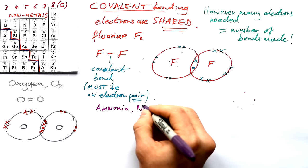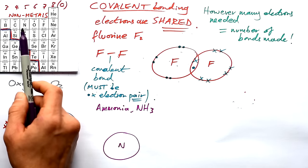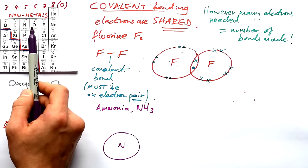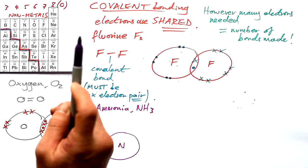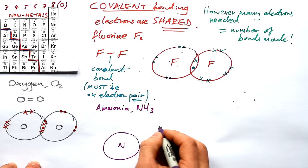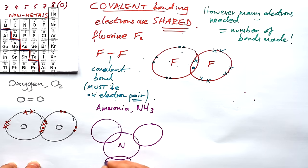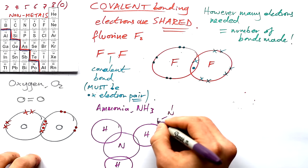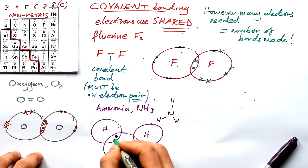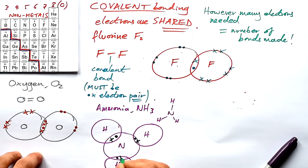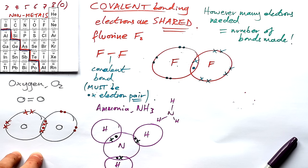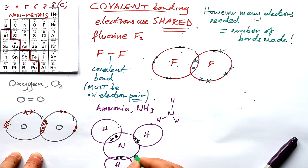What about ammonia, NH3? Nitrogen is in the middle; it's in group five, so it needs three electrons and makes three covalent bonds — one to each hydrogen. In the dot and cross diagram we have three dot-cross pairs. Hydrogens only need two electrons for a full outer shell — they're the element that bucks the trend. Checking nitrogen: it has five of its own electrons plus three shared, giving eight electrons total — a full outer shell.